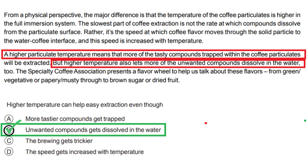This aligns with option B, which highlights the dissolution of unwanted compounds. Let's analyze the other options and explain why they are incorrect. Option A: More tastier compounds get trapped. This option is incorrect because the paragraph does not mention that more tastier compounds get trapped. It states that a higher temperature leads to the extraction of more tasty compounds, implying that they are being extracted rather than trapped.